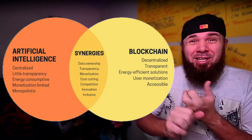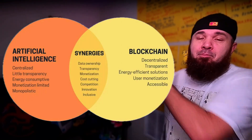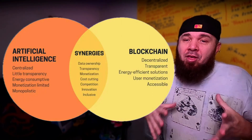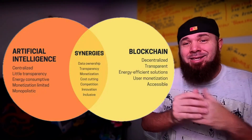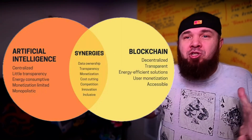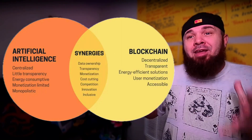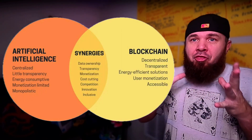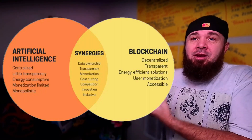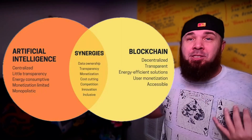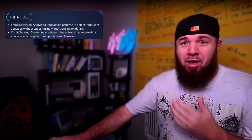Here are the beautiful synergies: data ownership, transparency, monetization of AI that isn't just a big company or big brand, the idea of cost cutting, the way that we're actually funding these projects, competition, and the idea that open source allows us to unlock the ability to innovate at scale. This graph summarizes the need for that ownership and transparency in AI, and ultimately that's where we're going in this whole conversation.